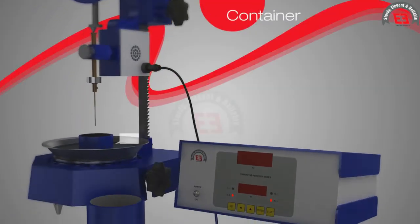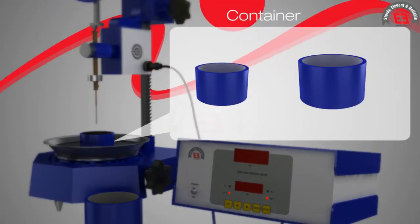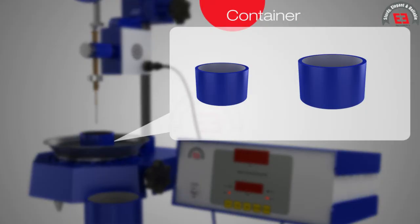Container. A cylindrical container of diameter 55 mm and depth of 35 mm is used to perform the penetration test of bitumen.